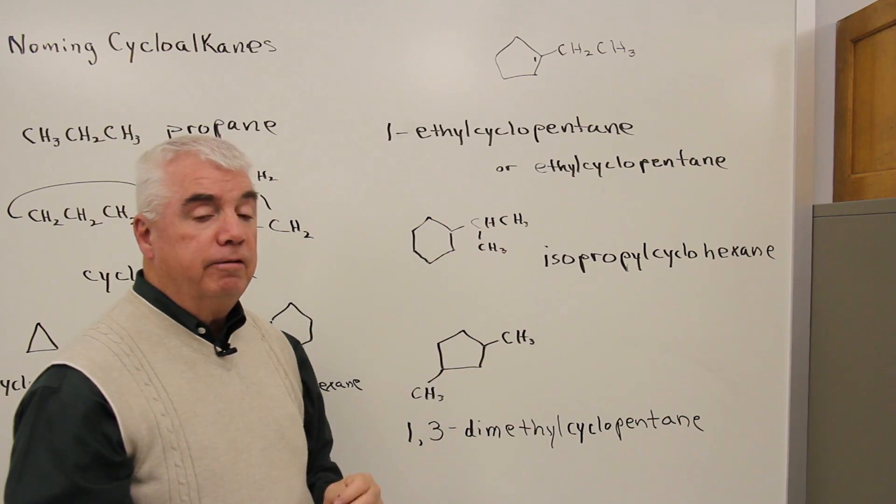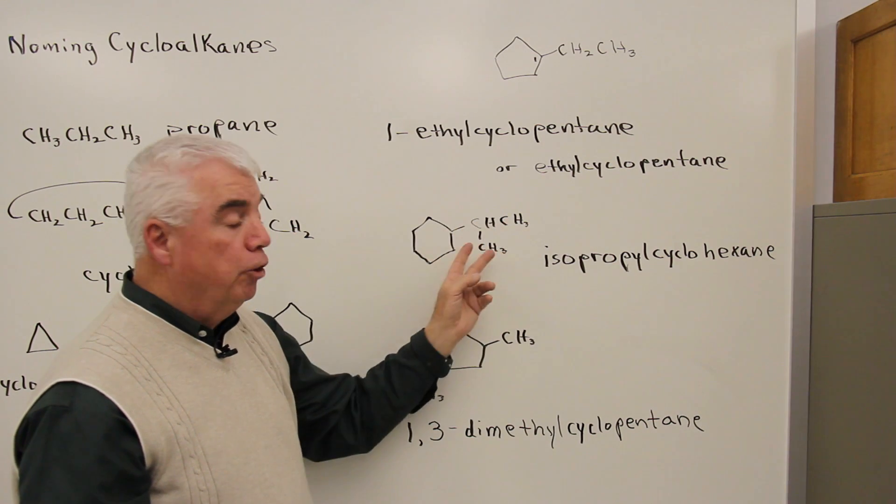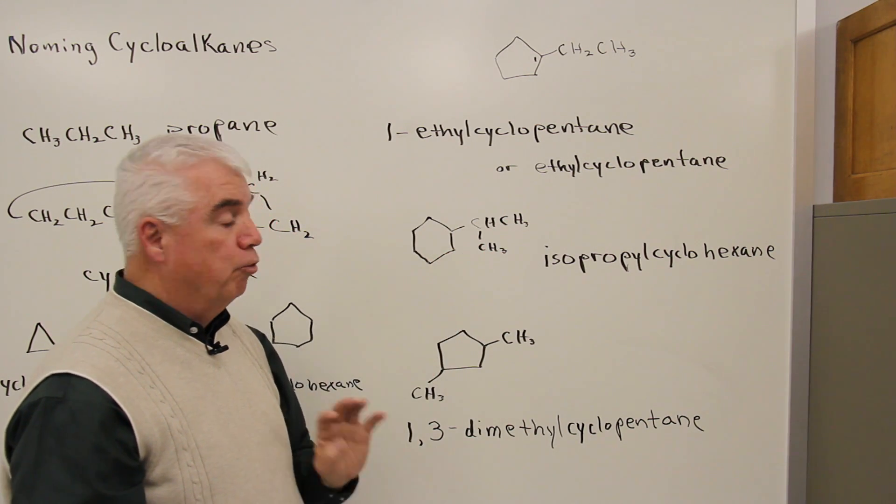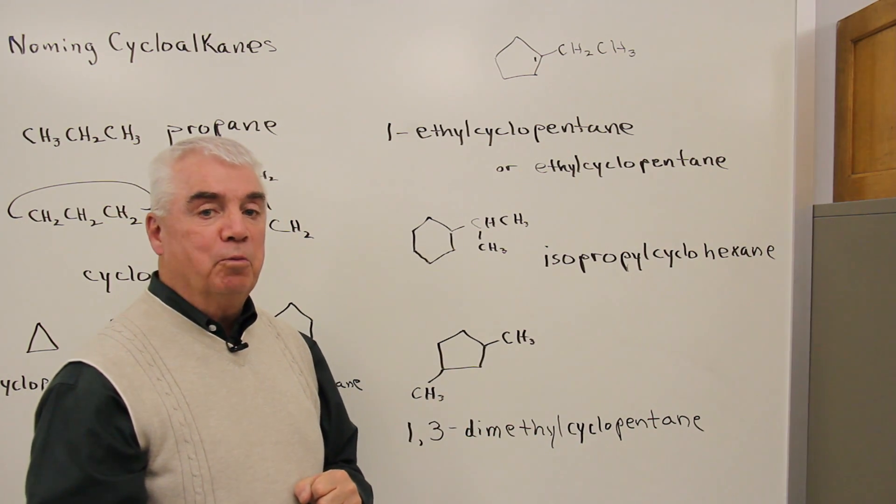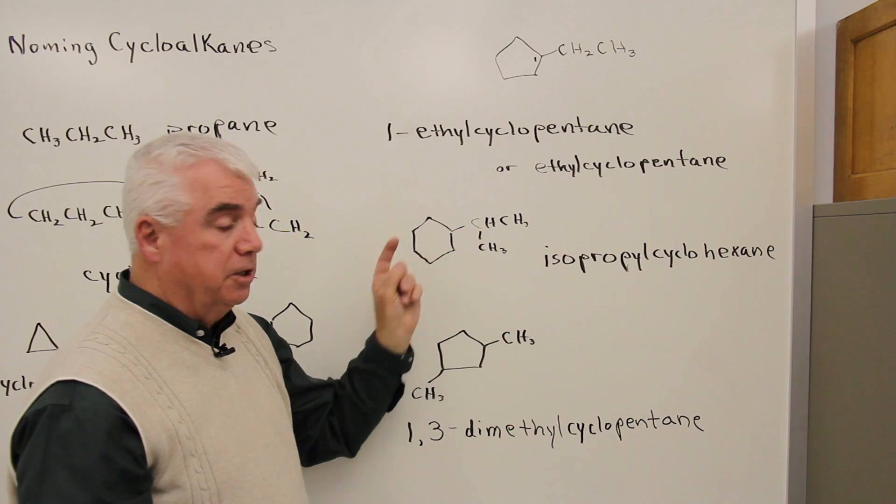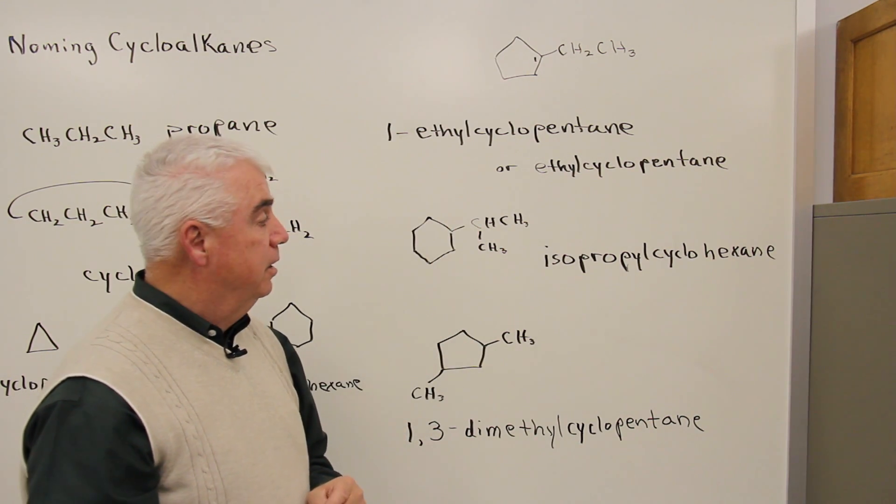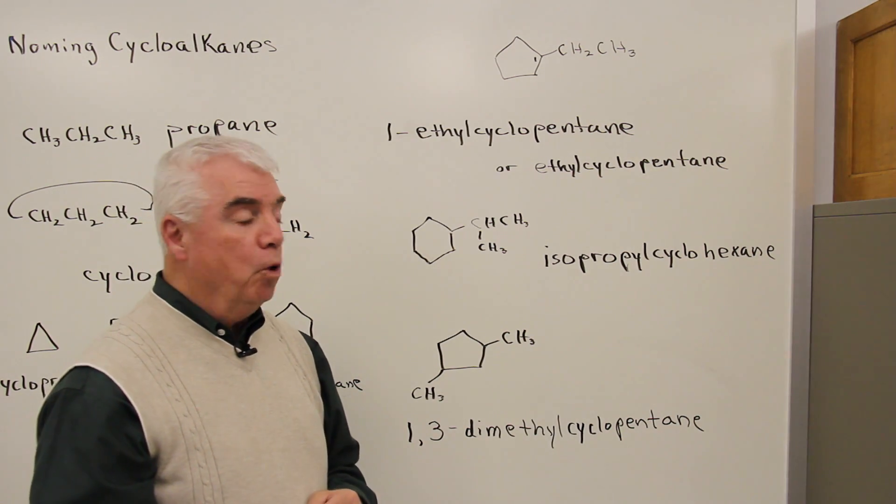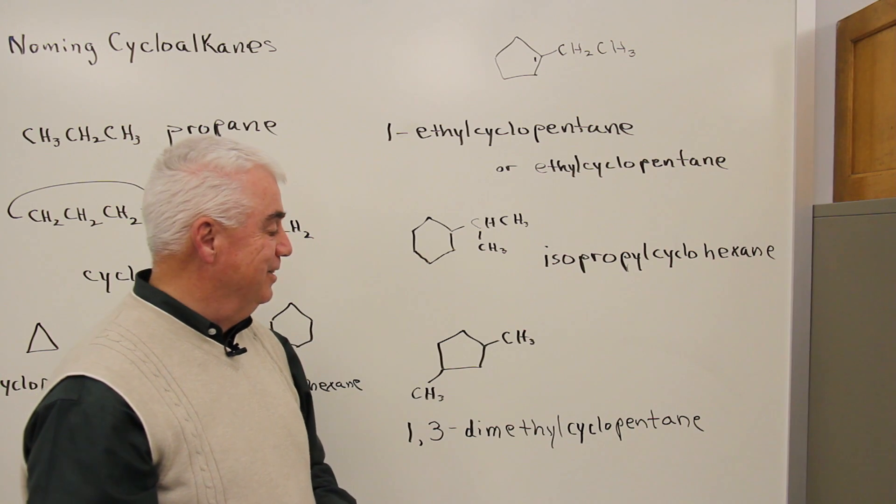Then I've got a chain of three carbons attached in a group. And remember, a group of three is called propyl, and it can either be propyl or isopropyl. And in this one is isopropyl because it's attached to the ring through that center position. So it would be one isopropyl cyclohexane or just isopropyl cyclohexane.